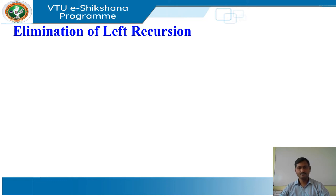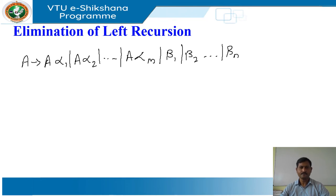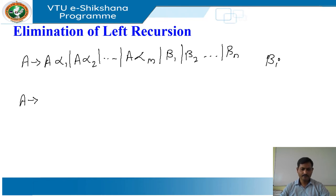Immediate left recursion can be eliminated by the following technique, which works for any number of A productions. First, group the productions as: A derives A alpha1 | A alpha2 | ... | A alphaM | beta1 | beta2 | ... | betaN, where no beta begins with A.